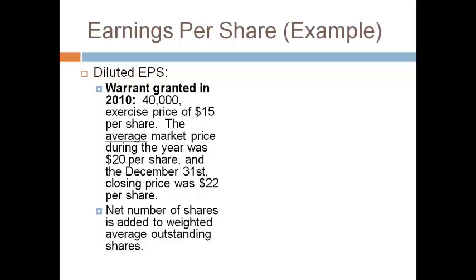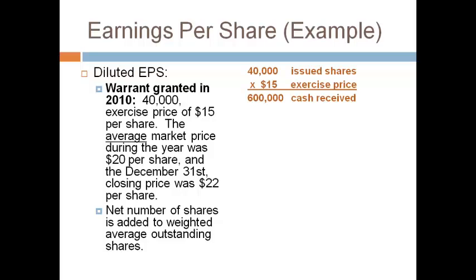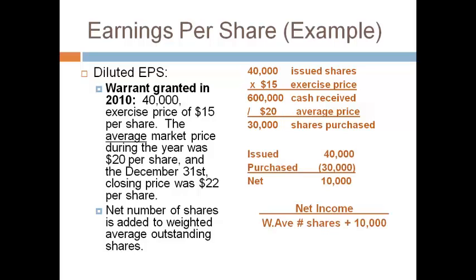The last stock equivalent we will convert is warrants. Warrants work just like options and follow the treasury stock method. Pretend the warrant is exercised and stock is sold for the exercise price of $15. The company will receive $600,000 from the exercise. Under the treasury stock method, it is assumed the company uses this cash to purchase treasury shares — which reduce the shares outstanding — at the average fair market price of $20. Pretend the company purchased 30,000 shares. The number of shares issued less the number of shares purchased is the net change to outstanding shares, and EPS is adjusted for the net shares issued.